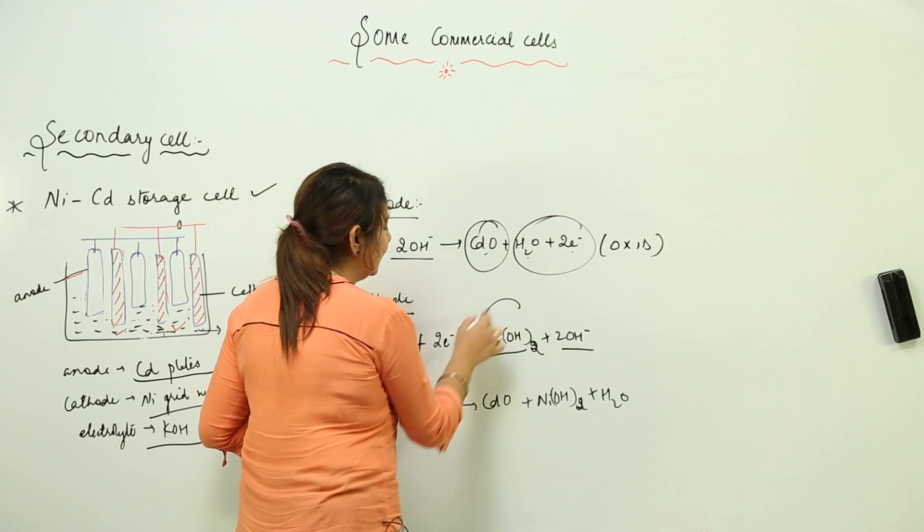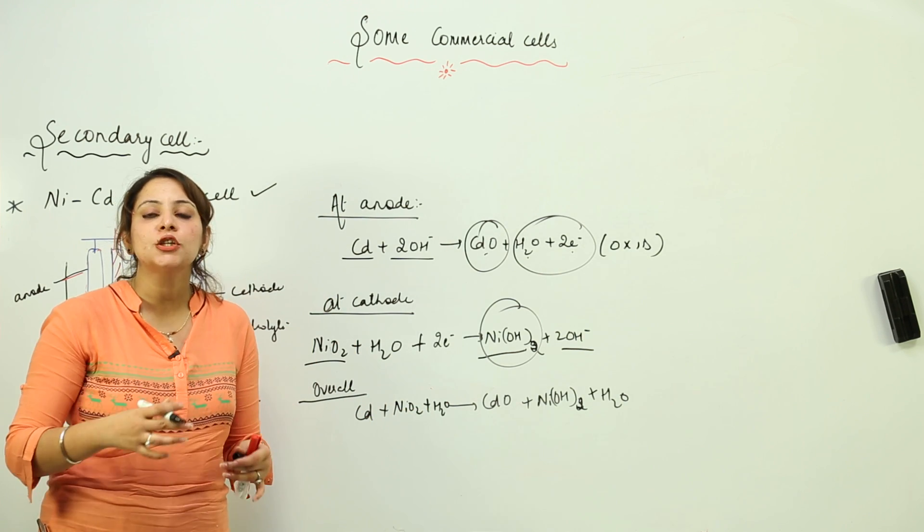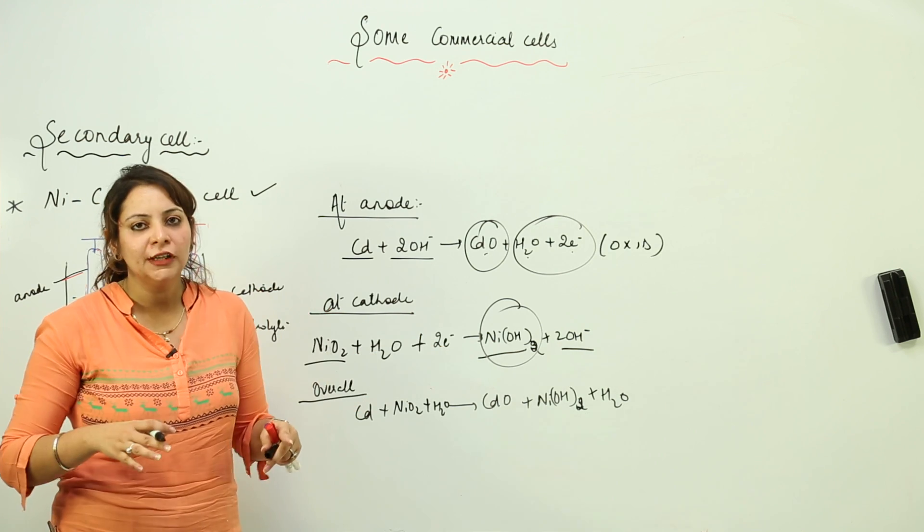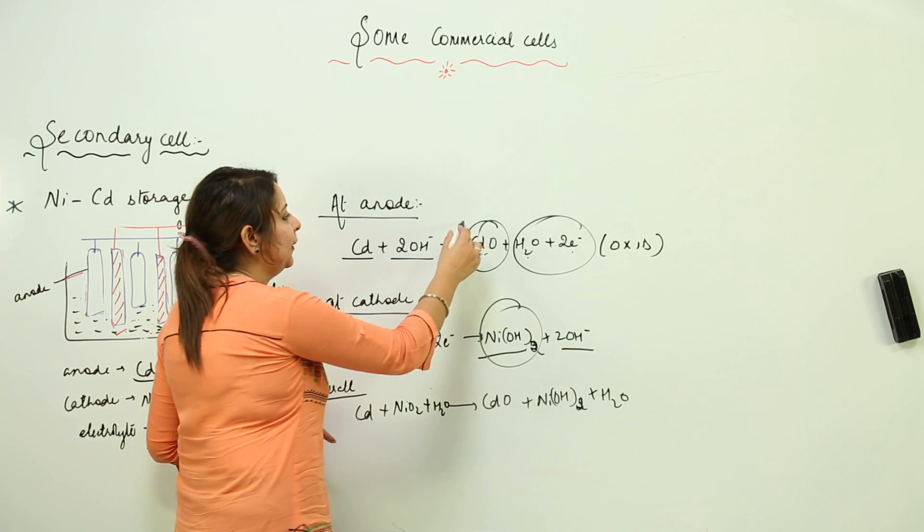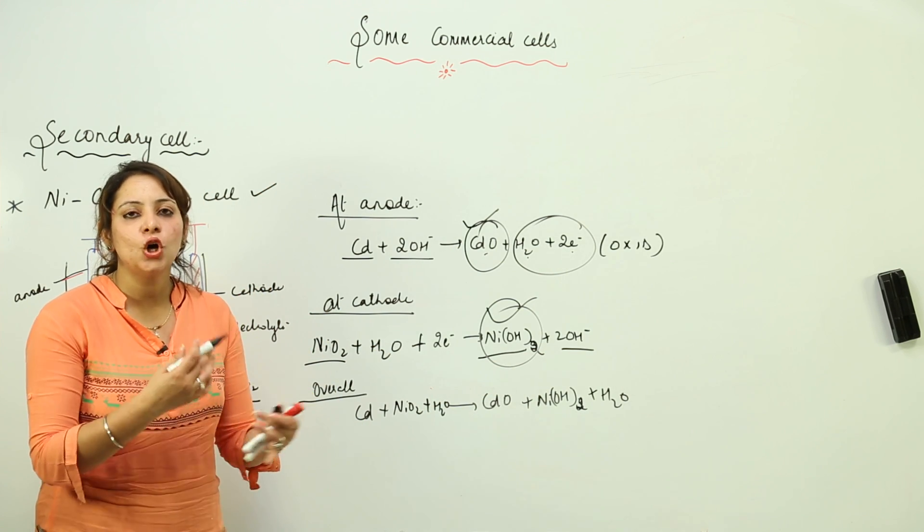The compounds stick to the electrodes. Just like PbSO4 was forming a coating, here it forms a coating on the anode and cathode. As long as the reaction continues, it keeps working.